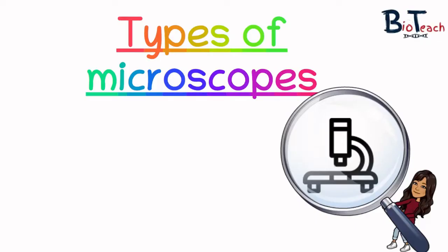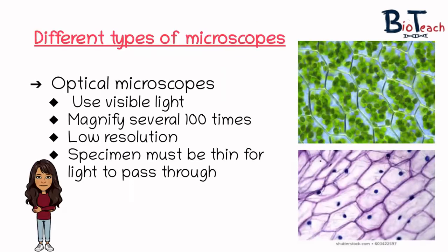Hi everyone and welcome to another video by BioTeach, this time focusing on the types of microscopes that you need to know about for the A-level biology subject. You will all be using optical microscopes in the lab to carry out practicals and probably study some histology samples when learning about the cell topic. The microscopes that you'll be using are also known as light microscopes and they are a very important tool in biology.